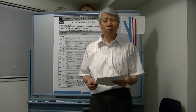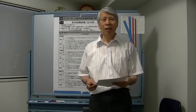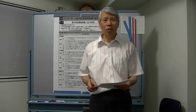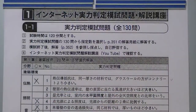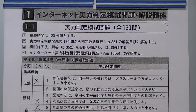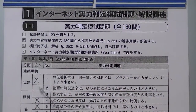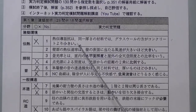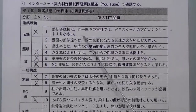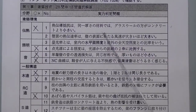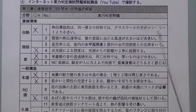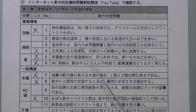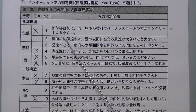これからインターネットの実力判定模試の解説を行います。回答はテキストの352ページに載せてありますので、それをご覧いただければ正確に採点することができます。ここで大雑把に要点だけ解説していきます。1番ですけれども、熱伝導抵抗はグラスウールとコンクリートでは、グラスウールの方が大きいということです。